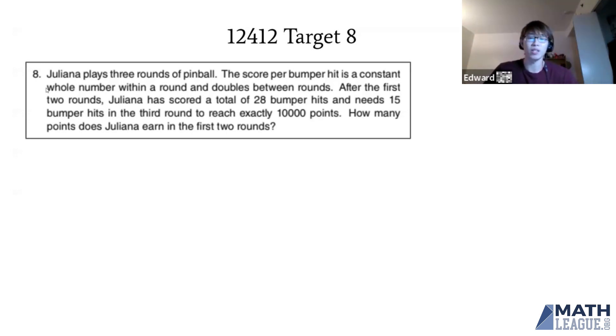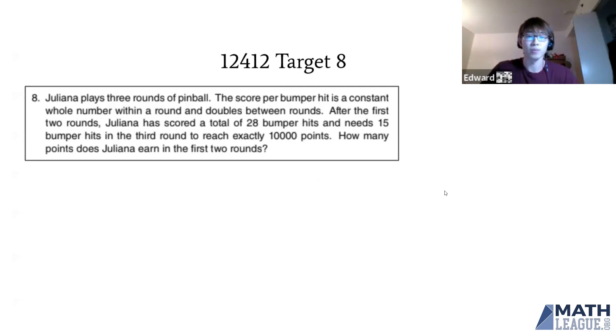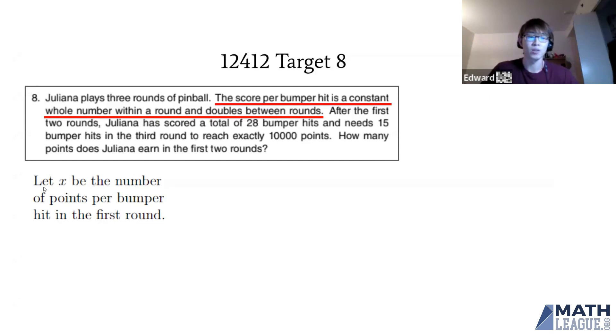We have a lot of info here. One thing that helps is to let variables denote certain things. Let X be the number of points per bumper hit in the first round. Since this number doubles between rounds, the second round will be 2X and the third round will be 4X.